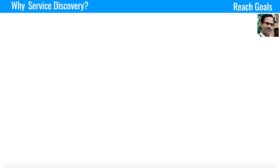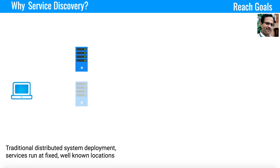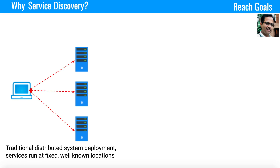Let's understand why service discovery is required. In a traditional distributed system, you have a client that connects to multiple servers. We know the location of the servers, and mostly it is a static IP address. With a static IP address, we can have it configured in a property file, and the client can access that file to connect to the different services — so there is no problem in this case.